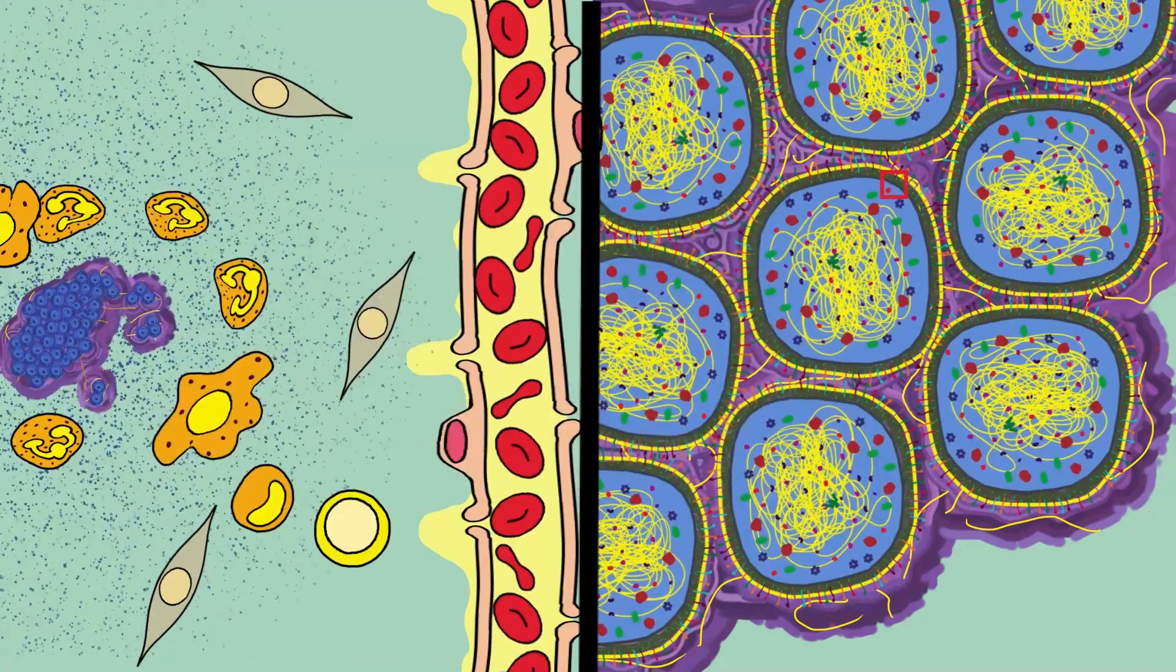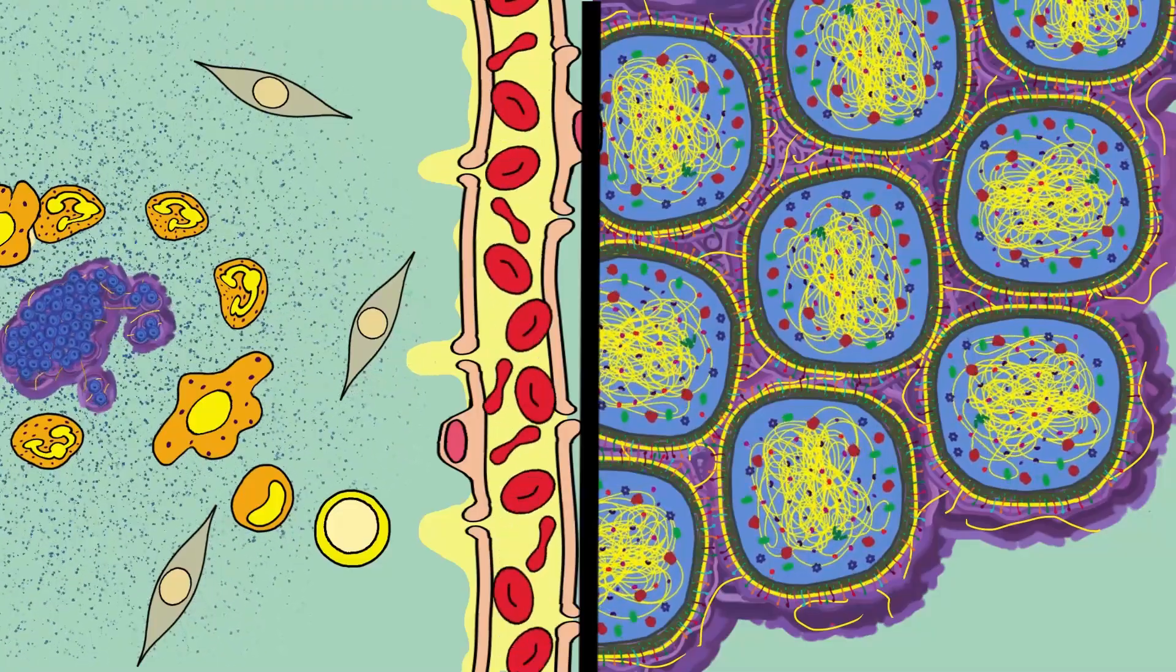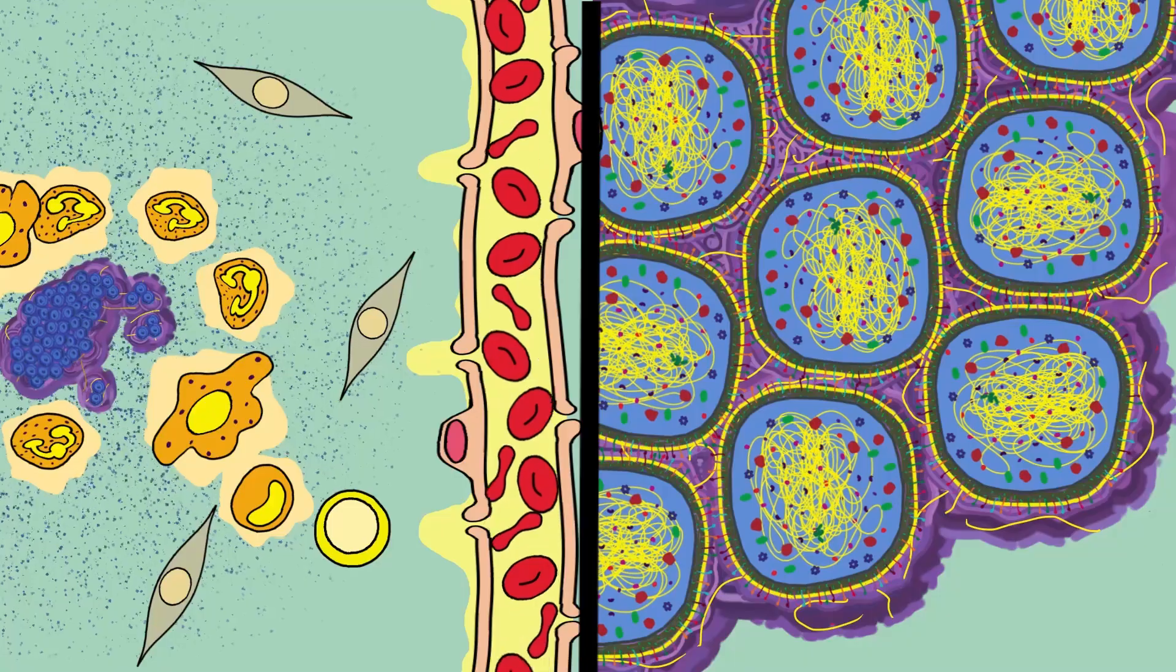The tables have turned and now phagocytes are the ones being attacked by pores on their membrane. Phagocyte molecules and ions start coming out until they reach chemical equilibrium and die.